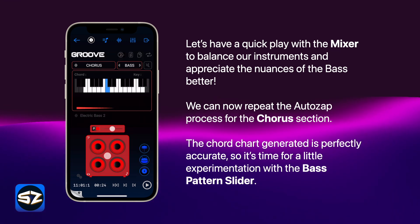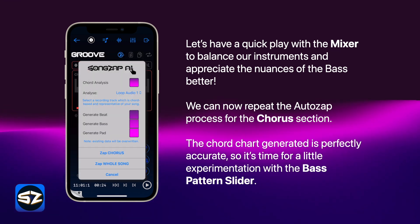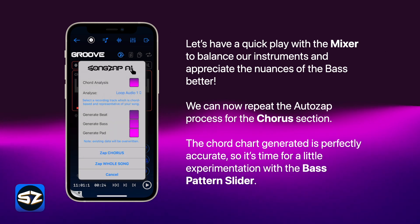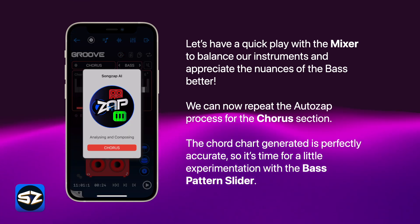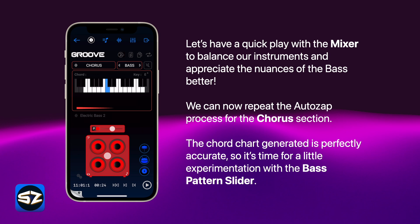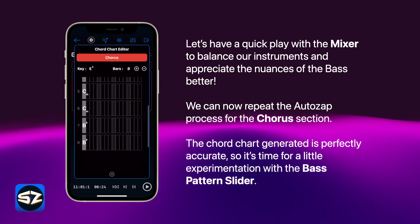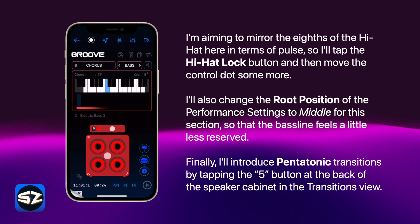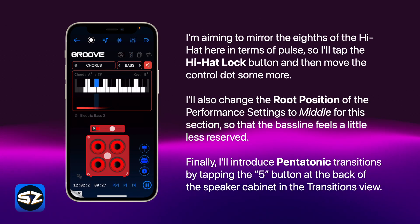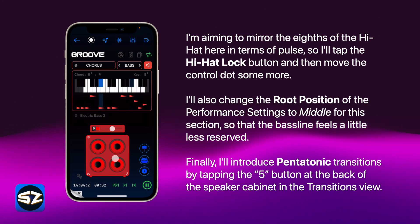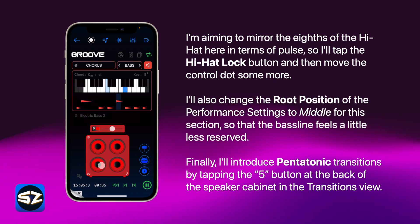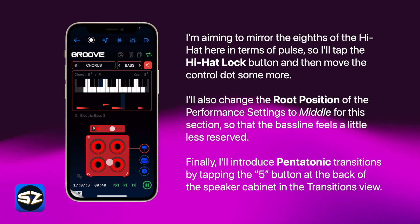We can now repeat the AutoZap process for the chorus section — choose Loop Audio 1 as the source, and let's generate bass and pads this time. The chord chart generated this time is perfectly accurate, so it's time for a little experimentation using the bass pattern slider. I'm aiming to mirror the eighths of the hi-hat in terms of pulse, so I'll tap the hi-hat lock button and then move the control dot some more.